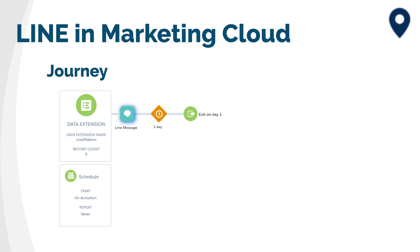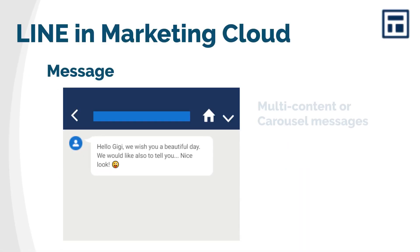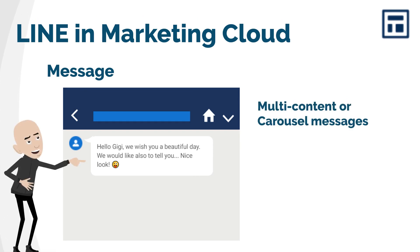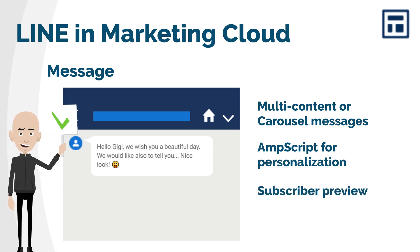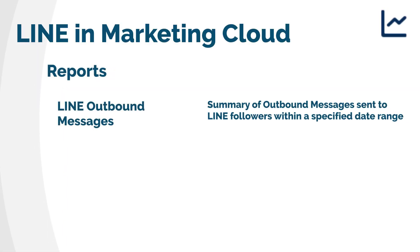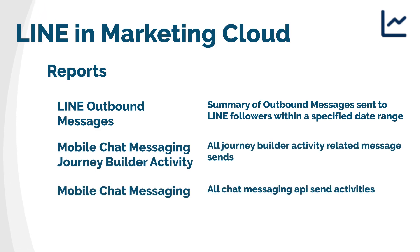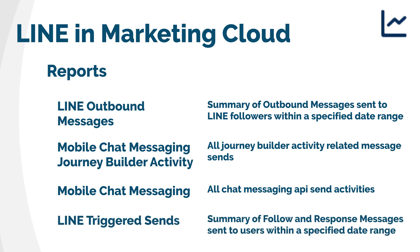The usage in Journey Builder is very straightforward, with a dedicated activity that you can drag and drop in the canvas. You can now also configure the message directly in Journey Builder. In Content Builder, you can create multi-content and carousel LINE messages, include personalization using AMPscript, preview the final results with real data, and create templates to reuse in the future.